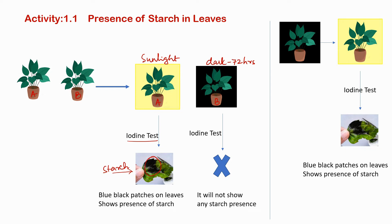Why is starch present? Because we kept this potted plant in the sunlight, where the plant performed the photosynthesis process, made carbohydrates, and stored them in the form of starch. So the blue and black patches on the leaves confirm that the plant carried out photosynthesis in the presence of sunlight.